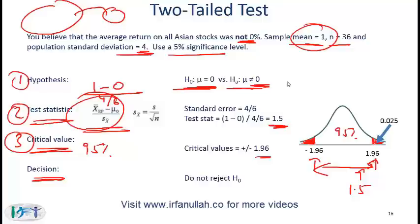What if you had drawn a sample where the sample mean was 10 — very high? Then the test statistic would be much higher, and you would have been able to reject the null because it would be larger than 1.96. To recap: step 1 is define the null hypothesis; step 2 is compute the test statistic; step 3 is find the critical values. If the test stat is greater than the critical value you reject the null; if it is less, you do not reject the null.